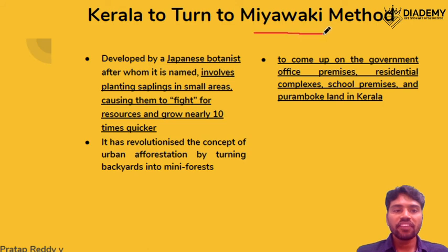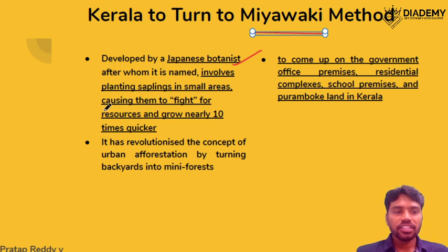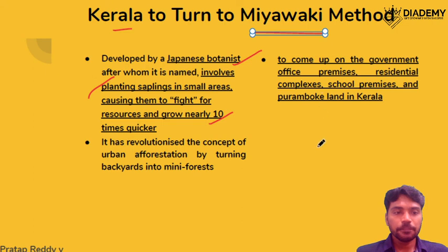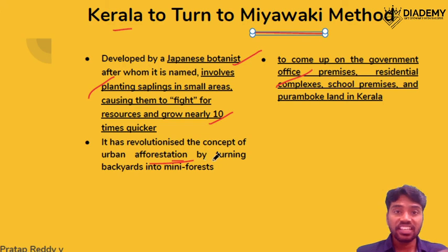The final topic: Kerala is adopting the Miyawaki method. Miyawaki is a Japanese botanist's name. He came up with this method by planting samples in very small areas in his backyard. Due to continuous competition between the species planted in that restricted space, they grow nearly 10 times faster. The Kerala government has taken up this method and plans to introduce it in government offices, premises, and residential complexes in different areas to aid the forestation program, especially in urban areas. This also helps in reducing the urban heat island effect.